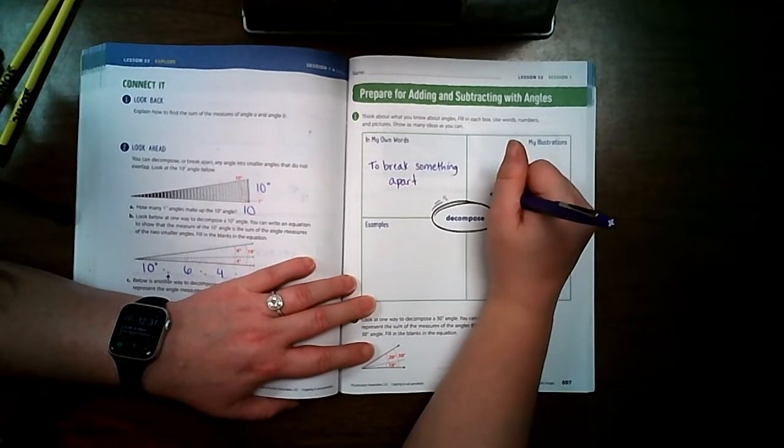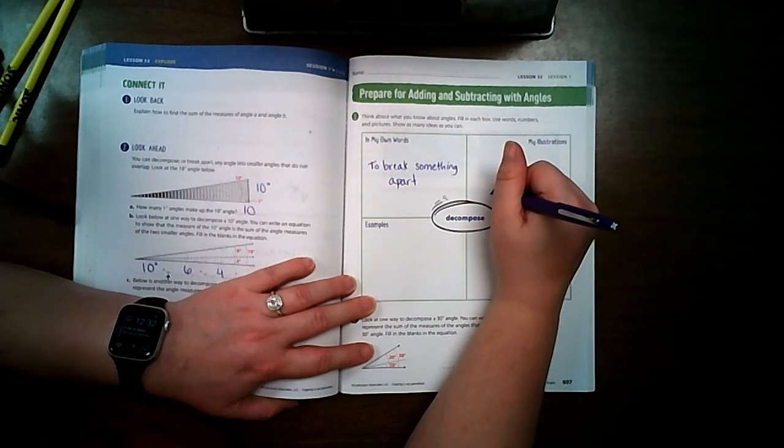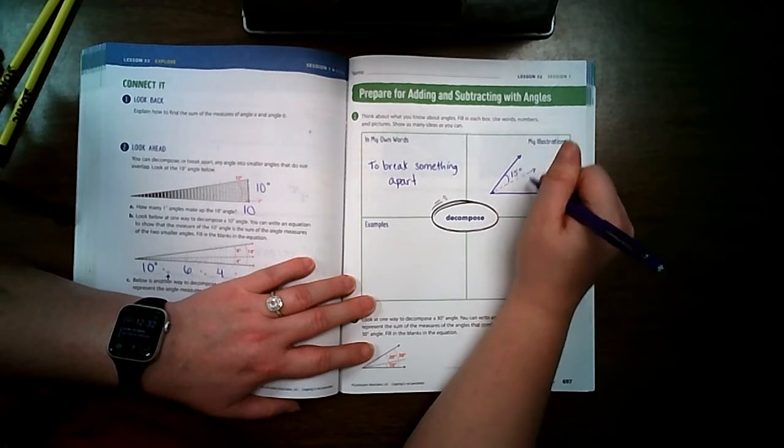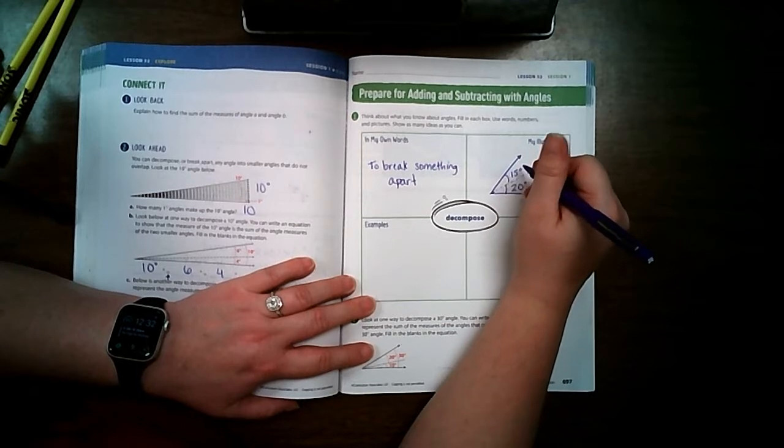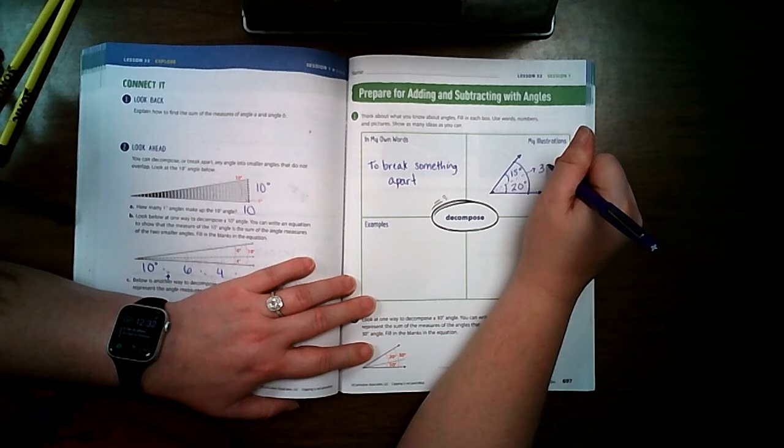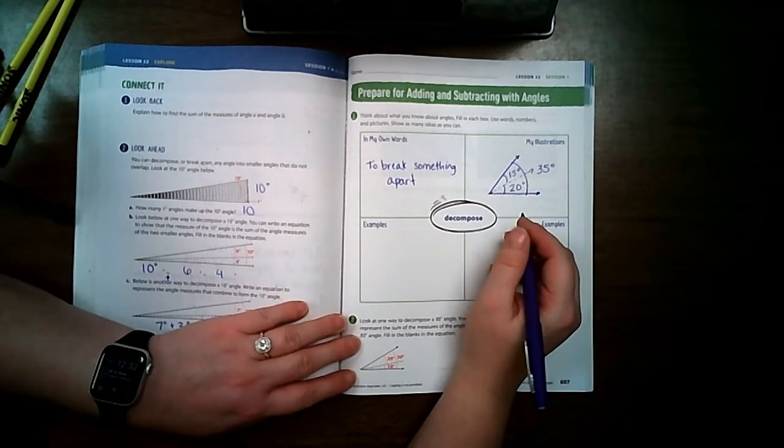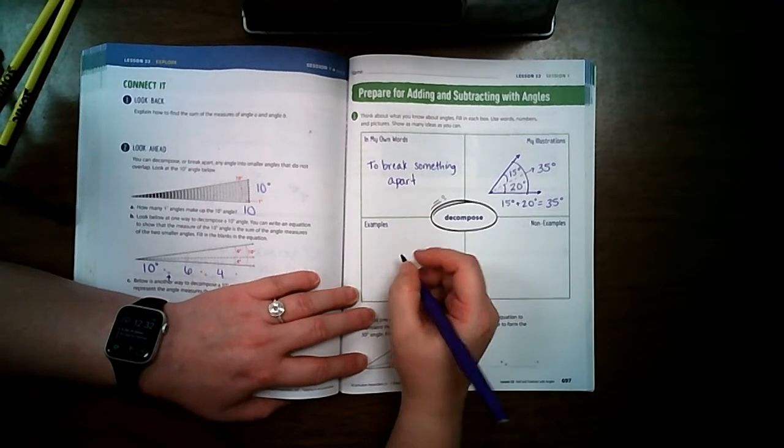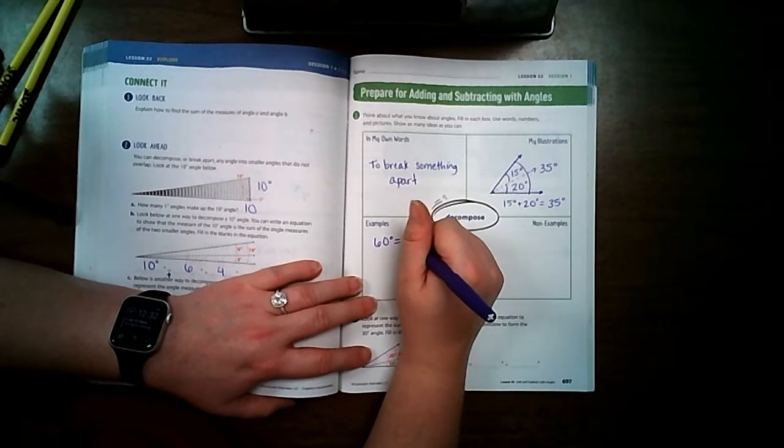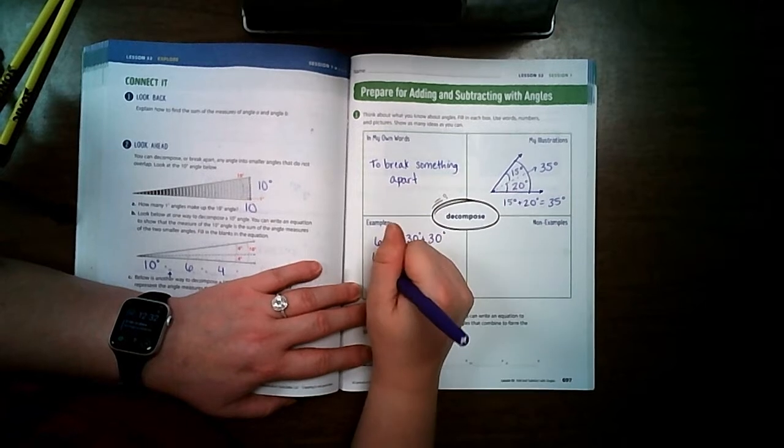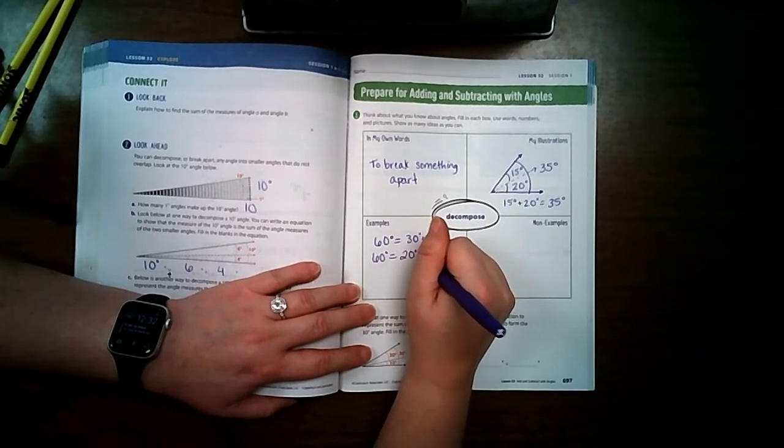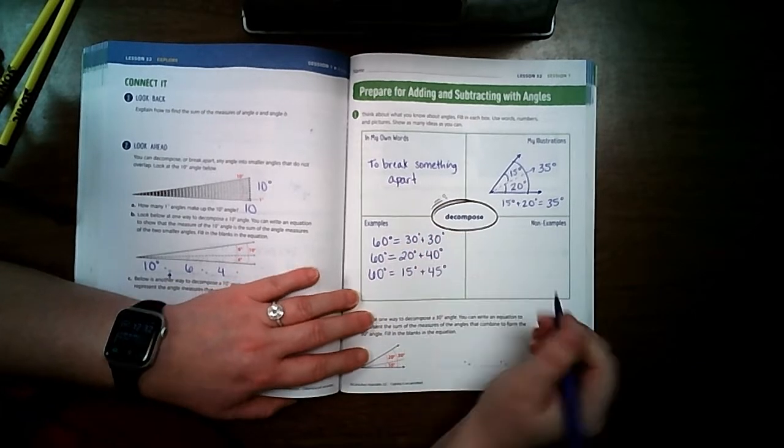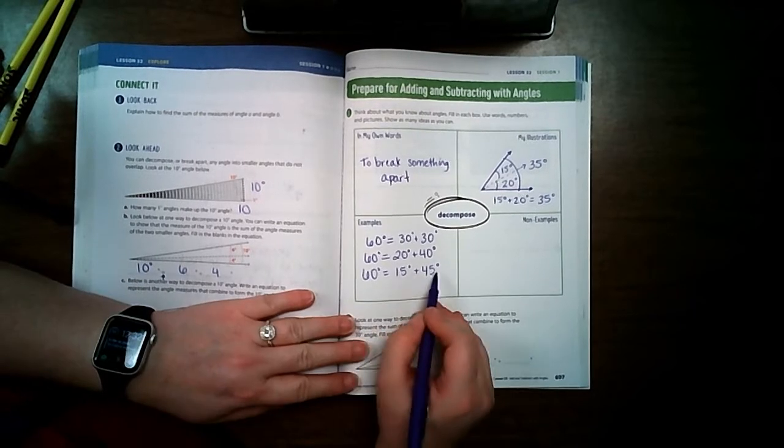When we're working with angles, we have 15 degrees plus 20 degrees equals 35 degrees here. Another way we could do it is 60 degrees equals 30 degrees plus 30 degrees. Or 60 degrees could equal 20 degrees plus 40 degrees. Or it could even equal 15 degrees plus 45 degrees. As long as we get to 60, the way that it's broken apart, as long as they add to 60, then it's still correct.